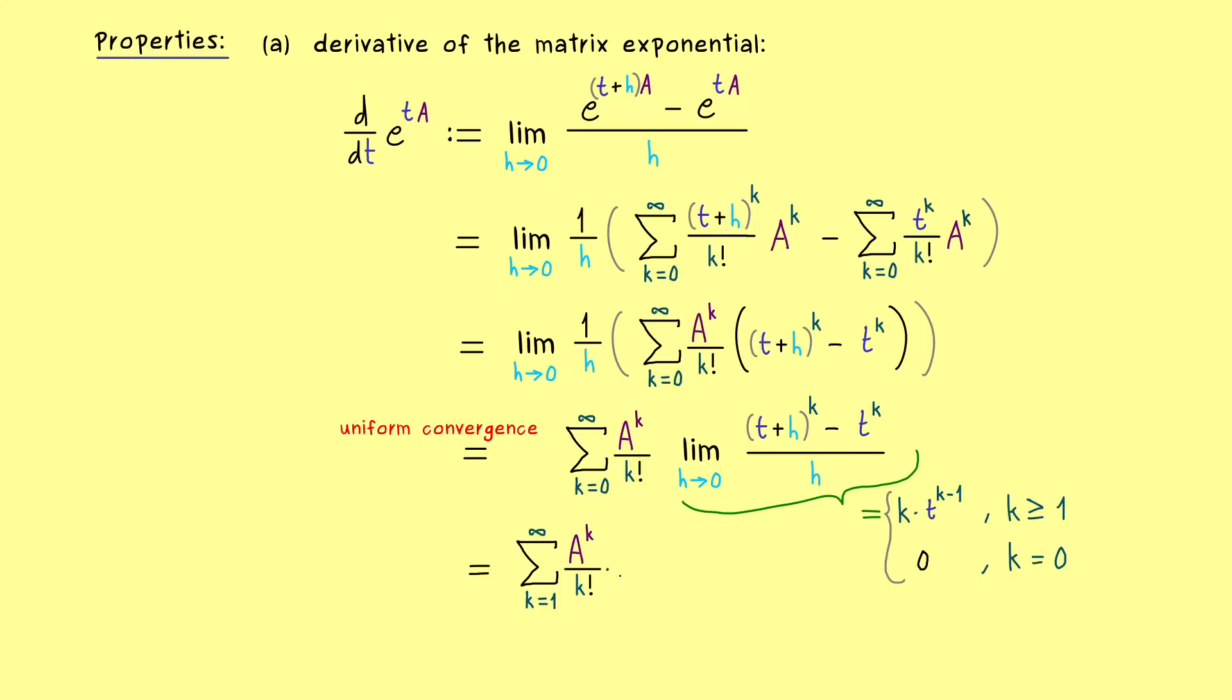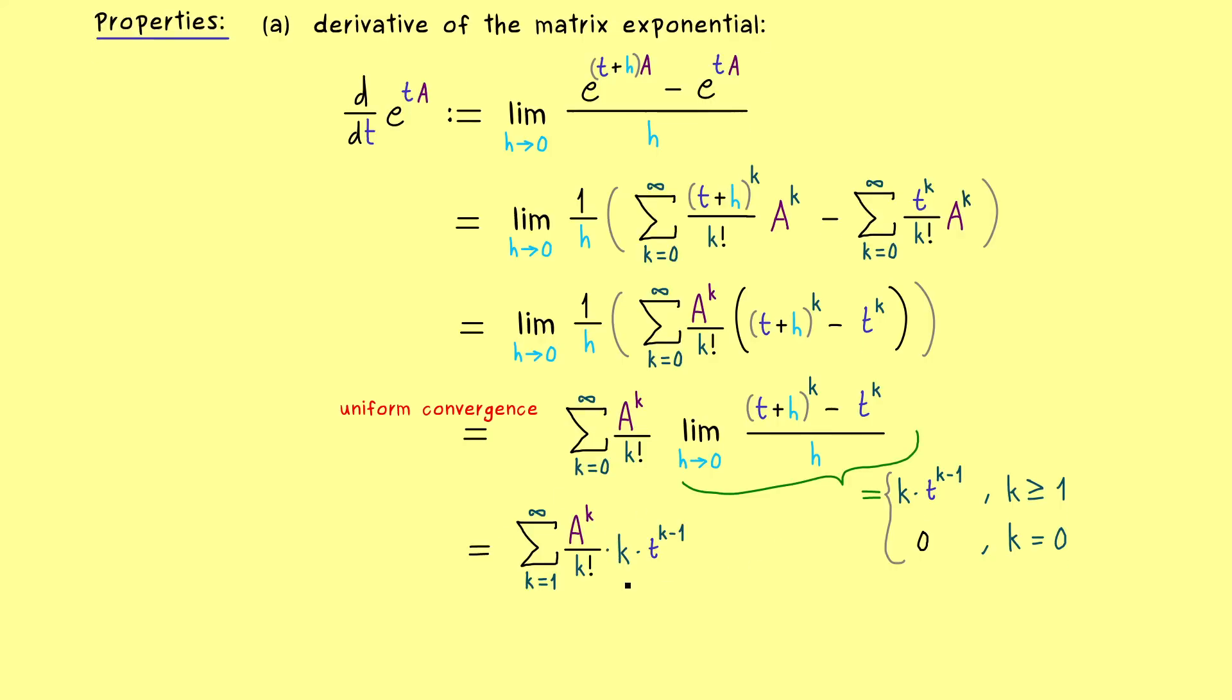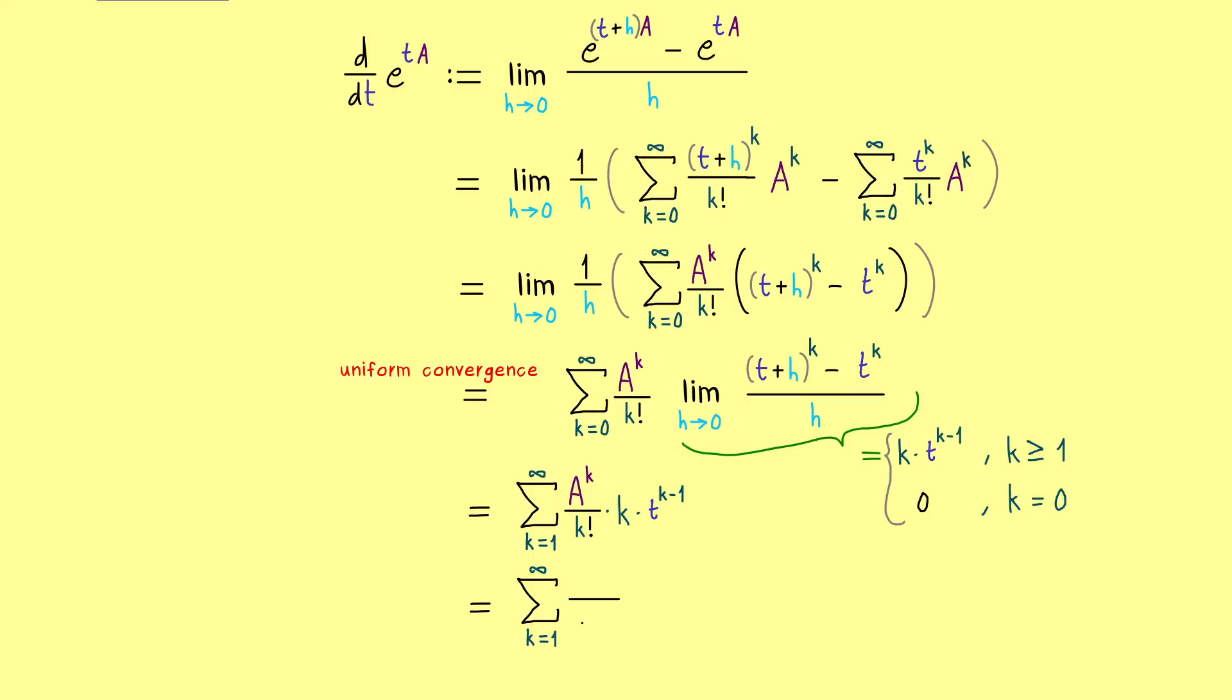And moreover instead of the limit now we just have k times t to the power k minus 1. So it already looks much simpler and we can also cancel that k here with a k in the denominator.